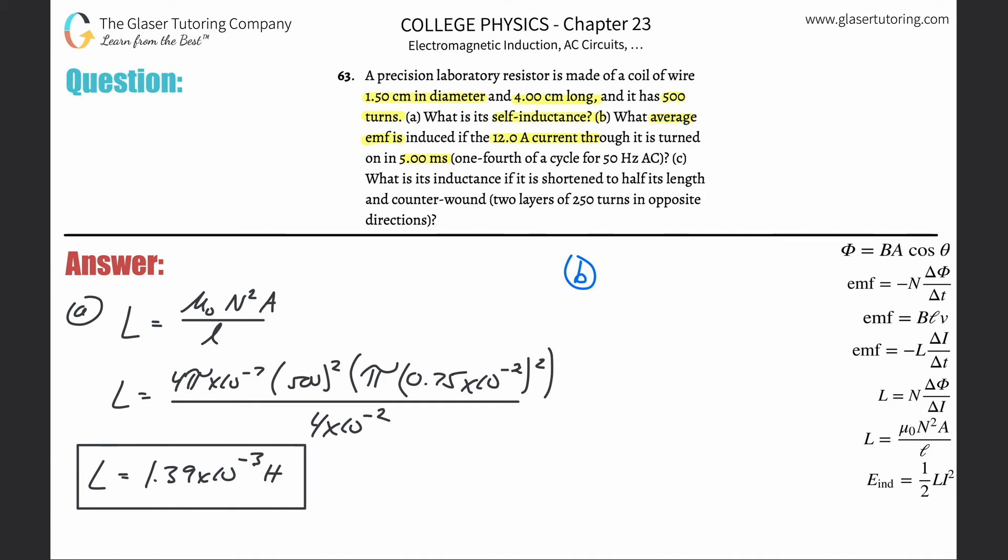This is the average EMF induced formula. EMF equals the inductance multiplied by the change in current divided by the change in time over which the current is changing.